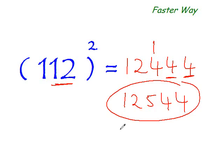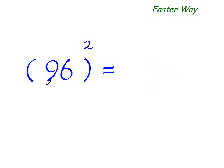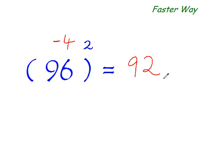What if the number we are squaring is below the base — that is, below 100? The same method applies. 96 is a distance of minus 4 from 100, so subtract that 4 from 96: 96 minus 4 is 92, giving you the first two digits. Two more digits to go — the square of this distance: 4 squared is 16. So the answer is 9,216.